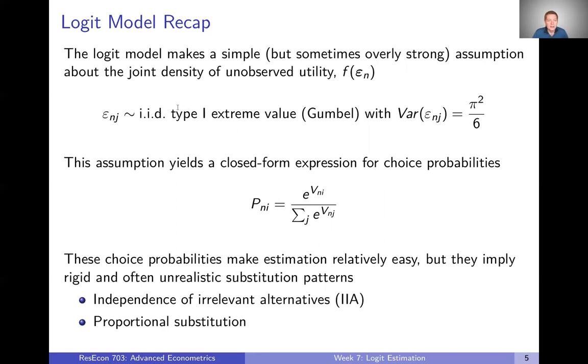The amount of unobserved utility that a decision maker gets from any alternative is unrelated to the amount of unobserved utility that they get from any other alternative. They are completely independent from one another. And in a lot of cases that's just not going to be true. We're going to be able to maybe group alternatives into groups in a way that there might be some obvious preference for one group versus another among certain people.